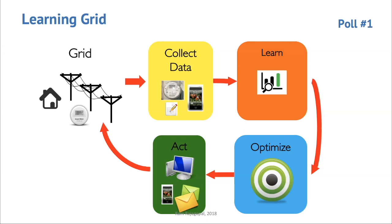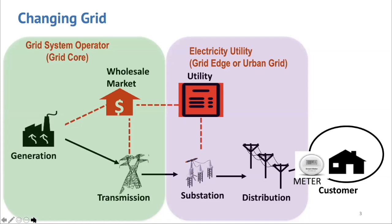So why do we need to worry about the idea of the learning grid? The traditional view of the grid is centralized large generation that produces power to meet demands — generation follows load. The utility reads meters from customers, goes into a wholesale market, and buys power from generators. The system operator ensures demand and supply match, meeting transmission constraints. The distribution network is managed by the utility to ensure reliability. There was not much visibility into customers, and this has worked extremely well for the last 50 to 100 years, going back to the time of Tesla and Edison.